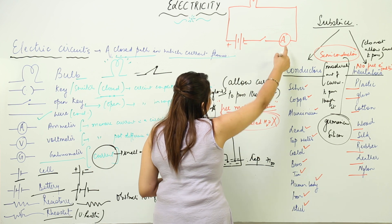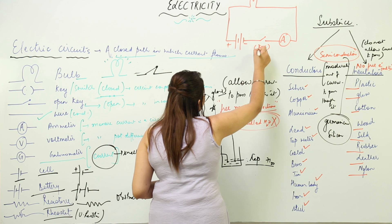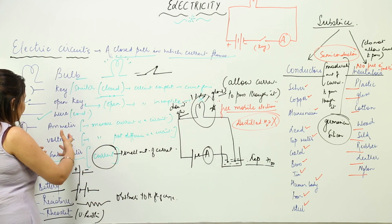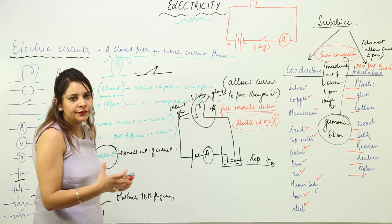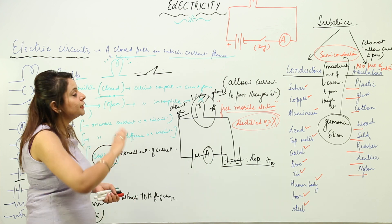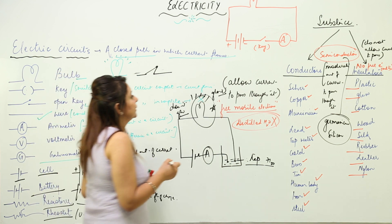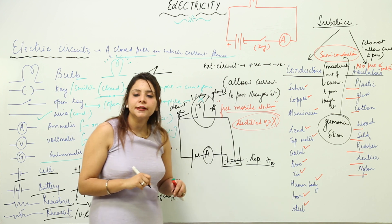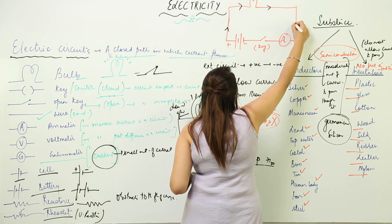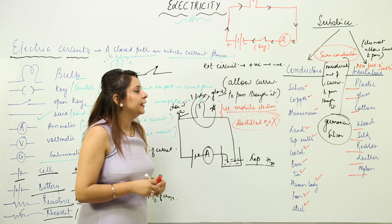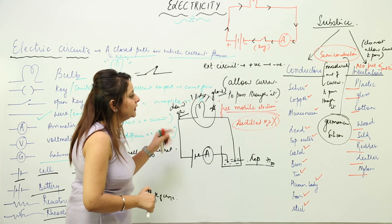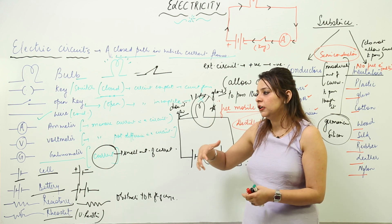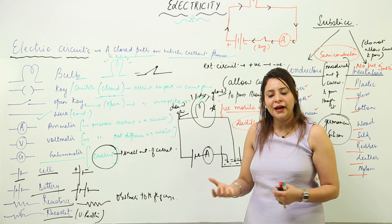A rough circuit includes a battery, a key, an ammeter, a wire, and a bulb. The battery has a positive terminal and a negative terminal. The ammeter measures current, and the key switches the circuit on or off. You can add a voltmeter or galvanometer as needed. Regarding current direction: in an external circuit, current flows from the positive terminal to the negative terminal, and in the internal circuit, it moves from negative to positive. Next, we will discuss the household circuit.